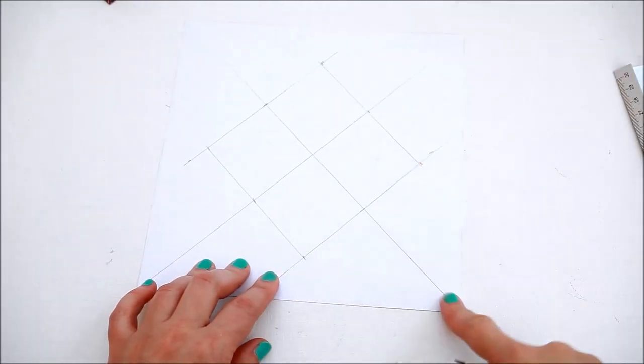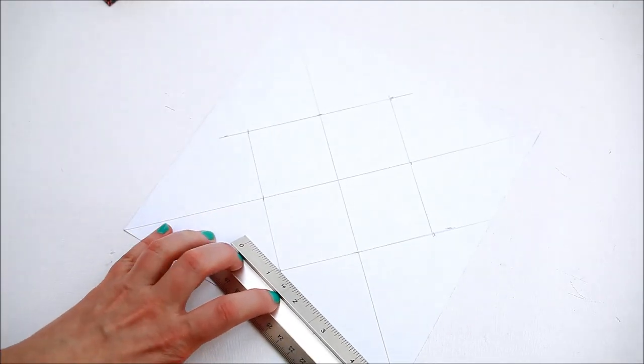The next step is to trace a triangle on each side of the square.